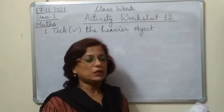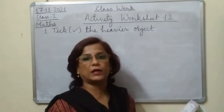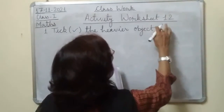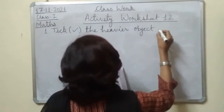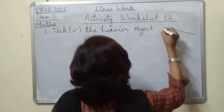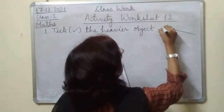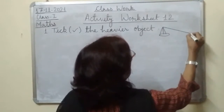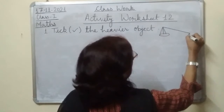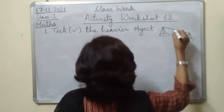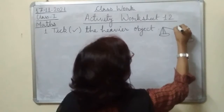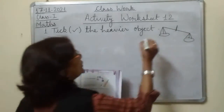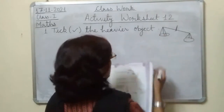Now here, what do you see? There is a balance here. You know what a balance looks like — it is used to compare weights. On one side there is a tomato, and on the other side there is another object.